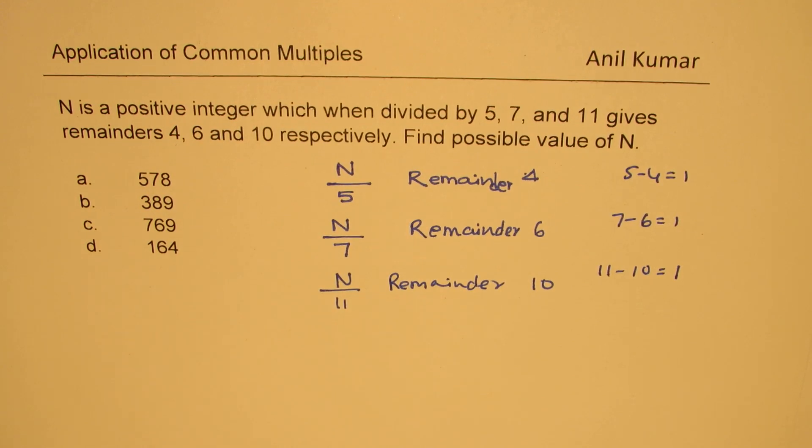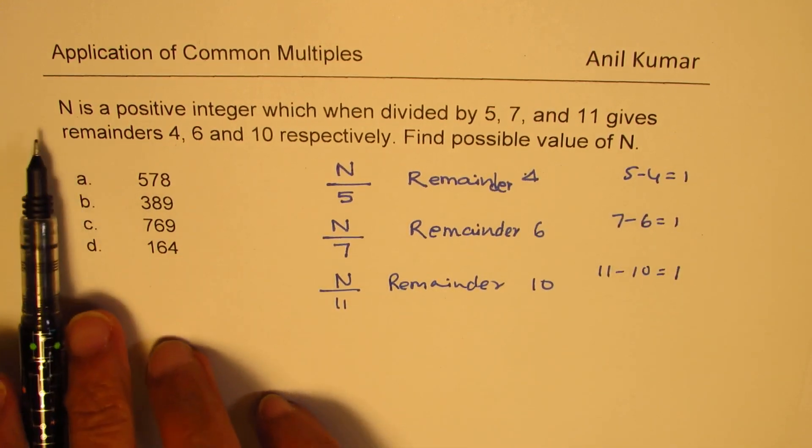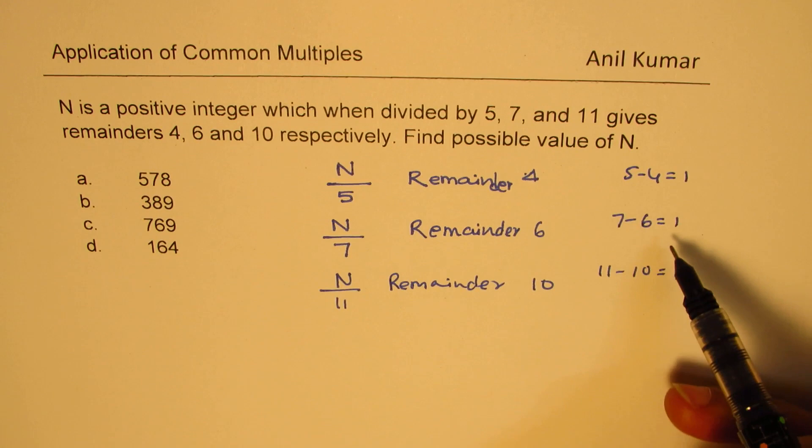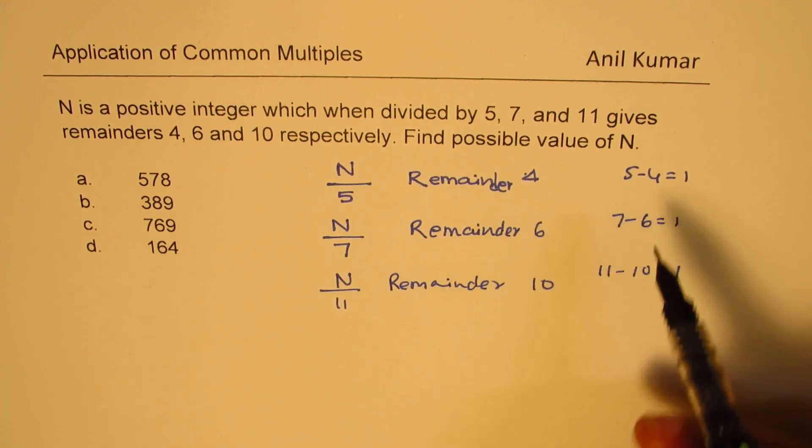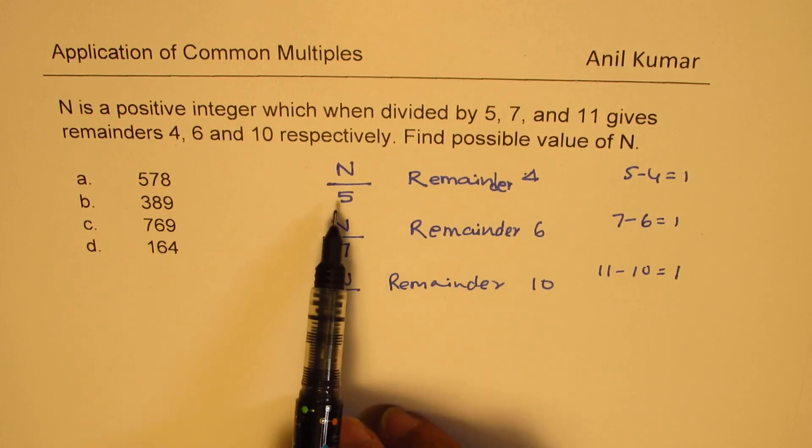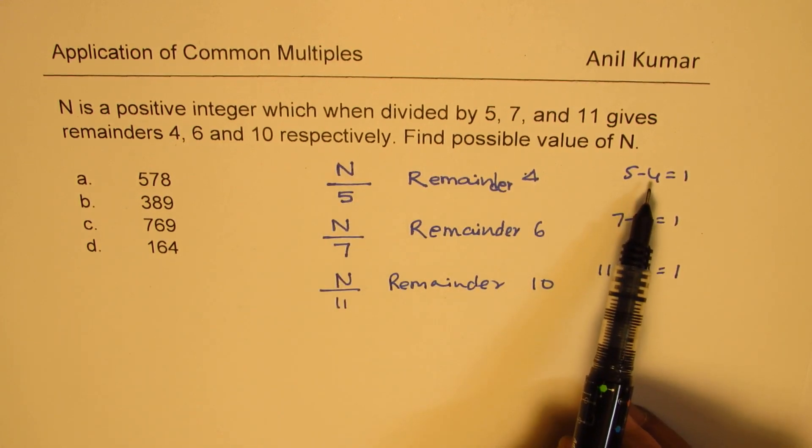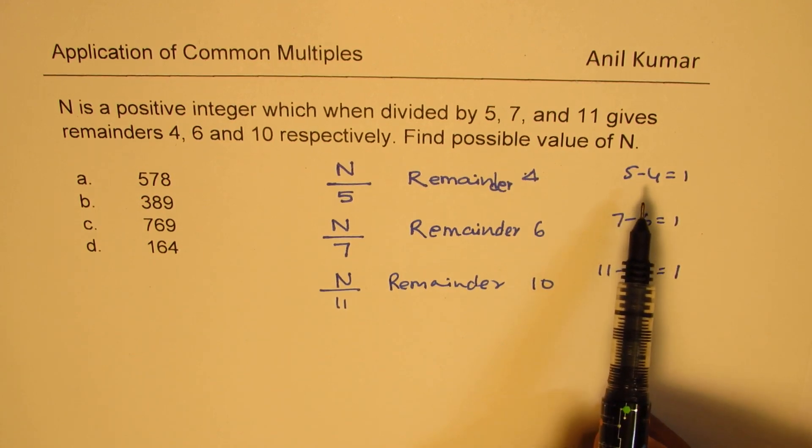That shows you what? It really means that we are looking for a number which is 1 less. See, when you divide by 5 and get a remainder of 4, that really means that the number is 1 less than a 5 multiple.